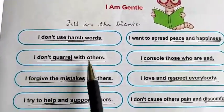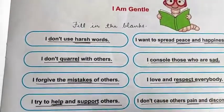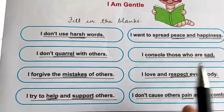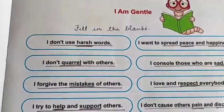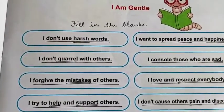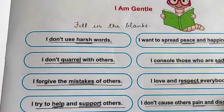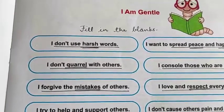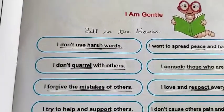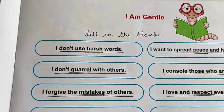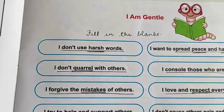I don't quarrel with others. Quarrel means fight — a gentle person never fights with anyone. I forgive the mistakes of others. If somebody has done wrong to you and you feel bad, it doesn't mean you will also do wrong to that person. If you are gentle, you will forgive that person who has done wrong to you. A gentle person always forgives the person who has done wrong to him.